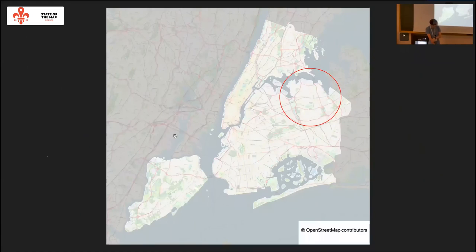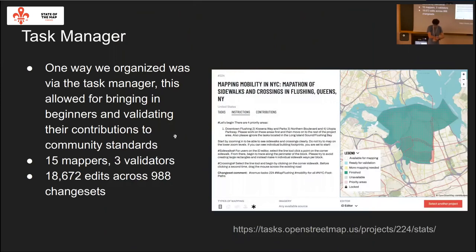We mapped one area using the Tasking Manager in 2021. This is one way to map sidewalks — a very concentrated effort to finish an entire area, with 15 mappers, 3 validators, and almost 1,900 edits across 1,000 changesets. We mapped the whole area, though we did this before curbs were considered important, which is unfortunate. Having an entire area mapped to a consistent level lets us do analysis, because we know data isn't missing.